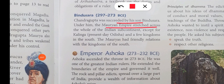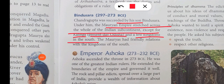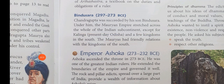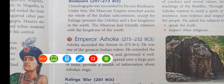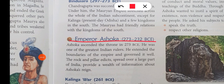Chandragupta Maurya's empire stretched across the whole of the Indian subcontinent except for Kalinga. Bindusara expanded the empire further. He maintained friendly relations with the kingdoms in the south and left Kalinga and Odisha aside, expanding more into the south.